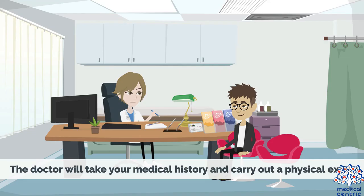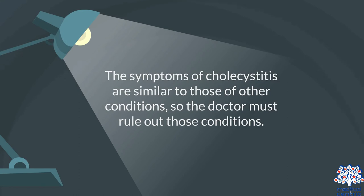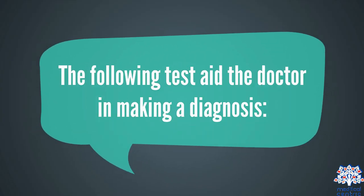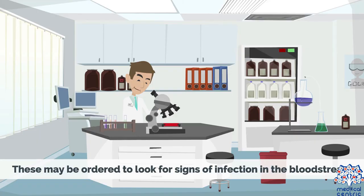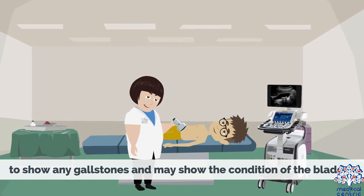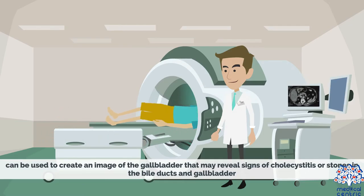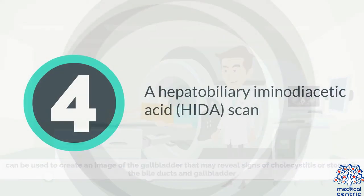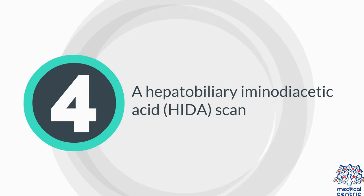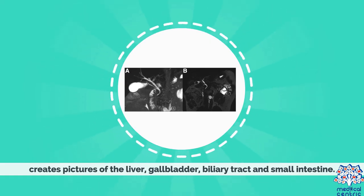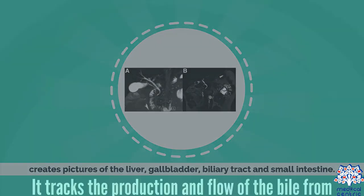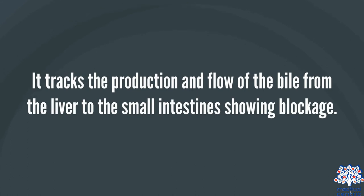The doctor will take your medical history and carry out a physical exam. Since the symptoms of cholecystitis are similar to those of other conditions, the doctor must rule those out. Diagnostic tests include blood tests to look for signs of infection, ultrasound to show gallstones and the condition of the bladder, and CT scan to create images of the gallbladder. A hepatobiliary aminodiacetic acid, or HIDA scan, creates pictures of the liver, gallbladder, biliary tract, and small intestine, tracking the production and flow of bile from the liver to the small intestine and showing any blockage.